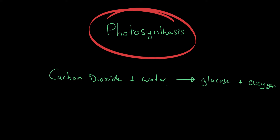This is a chemical equation, and light is not a chemical. What we can do is write 'plus light' above the arrow, because that indicates it's a condition rather than a chemical. You do see it written as 'plus light energy' as well, because it really is the energy from the light that the plants are going to be using. That is the equation.